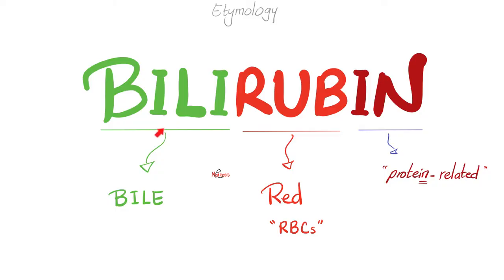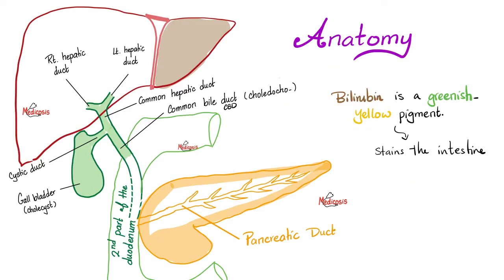What does bilirubin mean? 'Bili' means in the bile. 'Rubra' means red, because we're referring to the red blood cell — bilirubin is the waste product you get when you break down your red blood cells after they have finished their lifespan. And if it ends in '-in,' it means it's either protein or protein-related for the most part.